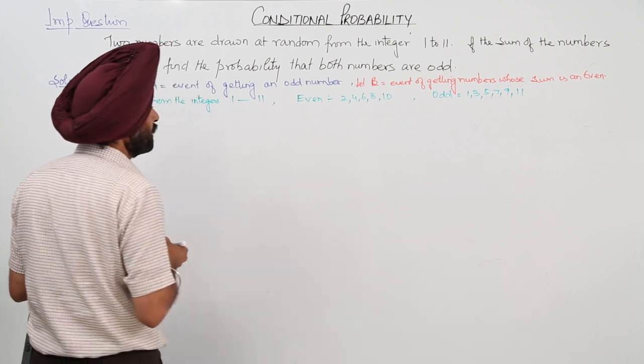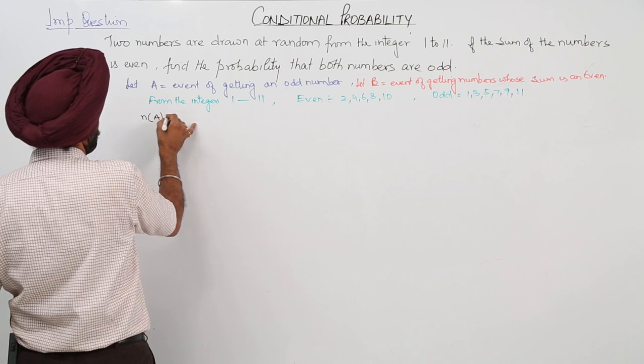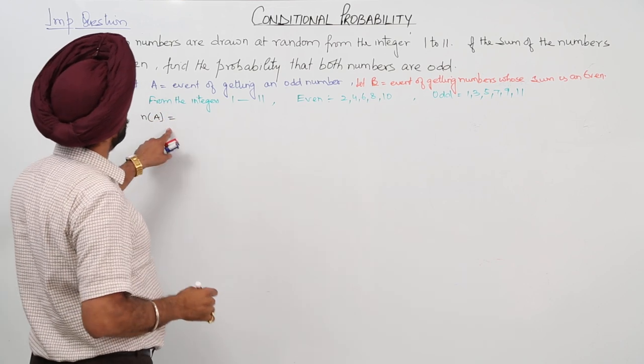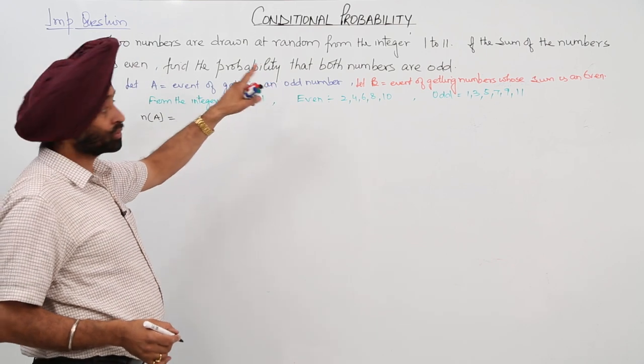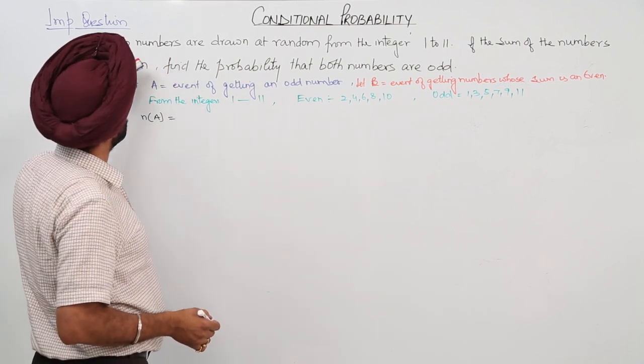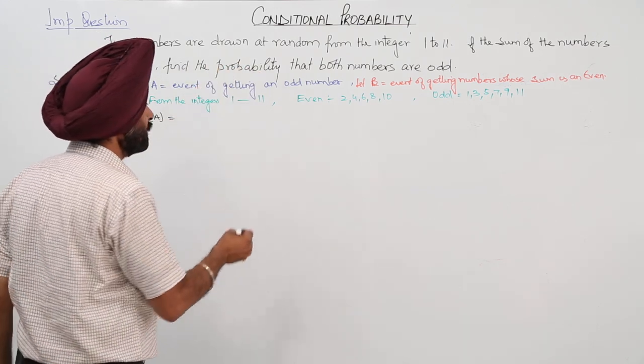Now n(A) is equal to - we have to find 2 numbers are drawn. Be careful while solving the question, 2 numbers are drawn at random, not 1 number.